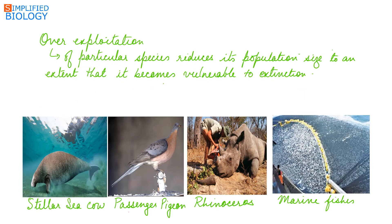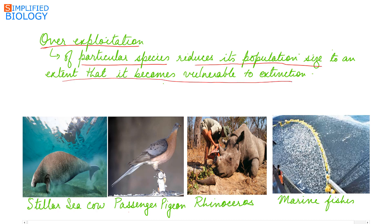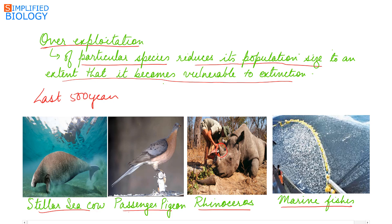The next cause is over-exploitation. Humans depend on nature for food and shelter, and in the process over-exploit natural resources. Over-exploitation of a particular species reduces its population size to an extent that it becomes vulnerable to extinction. In the last 500 years, the Steller's sea cow and passenger pigeon have become extinct due to human over-exploitation. The rhinoceros, now facing extinction, is killed for its horn, which is sold for more than the price of gold. Similarly, marine fishes are being over-harvested and removed from the sea in large quantities.